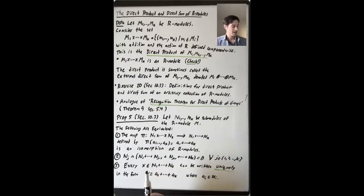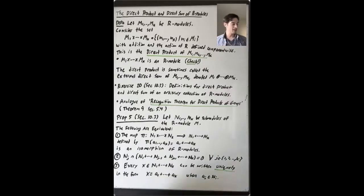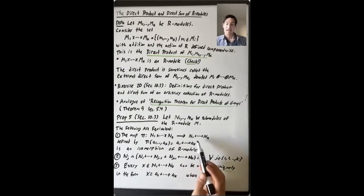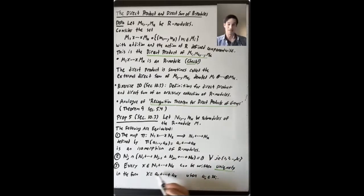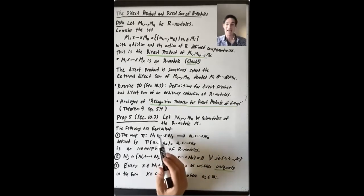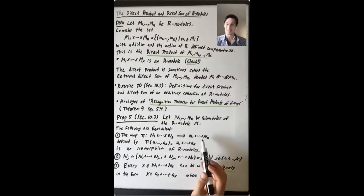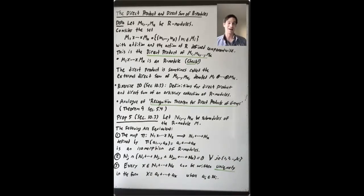The third characterization: every x in the sum N1 + ... + NK can be written uniquely in the form x = a1 + a2 + ... + ak, where a_i is in N_i. If you can write everything in a unique form as a sum of elements of these modules, that means the sum is isomorphic to the external direct sum. In that case, this sum is called the internal direct sum — just as we saw for groups.